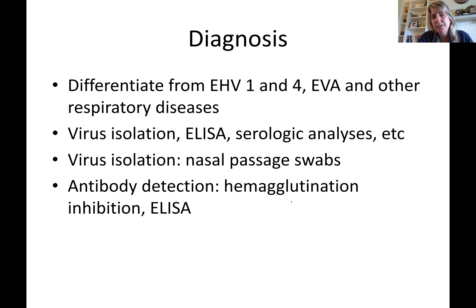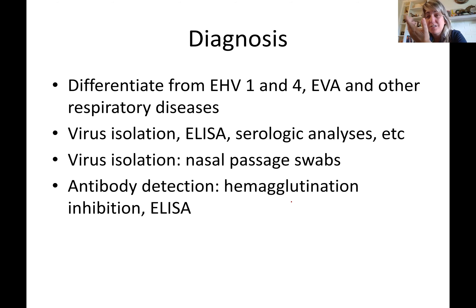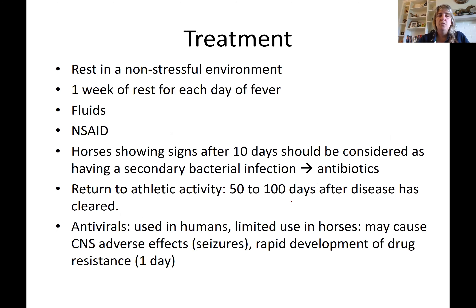Diagnosis requires differentiating from other respiratory diseases. The three most important viral respiratory diseases in horses are influenza, equine herpesvirus 1 and 4, and equine viral arteritis. Strangles is the key bacterial differential. Diagnosis can be made by nasal swab for virus isolation, which may take one to two days, or by antibody detection against influenza, testing multiple horses in the outbreak.